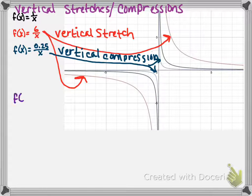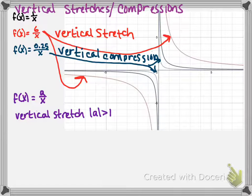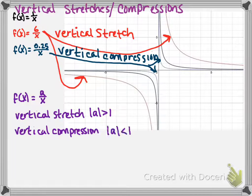0.25 over x is the blue function. This is a vertical compression. Just like in the past, if we're multiplying our function by some a, so a times 1 over x is just a over x, this is a vertical stretch if the absolute value of a is greater than 1, and a vertical compression if the absolute value of a is less than 1.